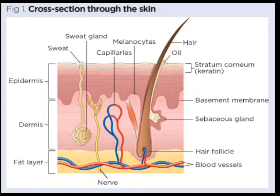The dermis is the inner layer and it is thicker than the epidermis. It contains the sweat glands, sweat ducts, blood vessels and hair follicles. Sweat ducts have cells that remove sweat and allow it to pass through the pores and out of the body. The lower part of the dermis is made up of fat deposits.